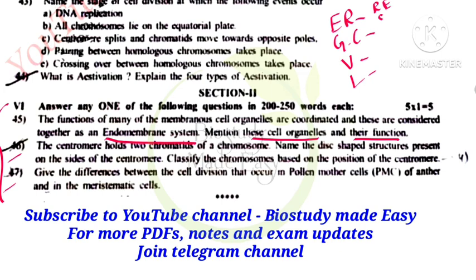The rough endoplasmic reticulum and smooth endoplasmic reticulum have distinct functions. The Golgi complex is responsible for packaging of materials. Vacuoles are involved in storage.